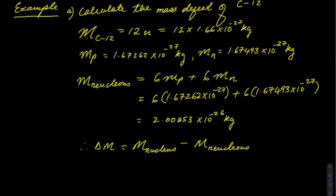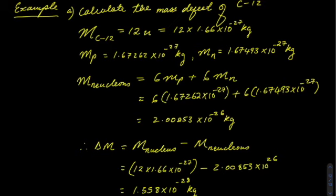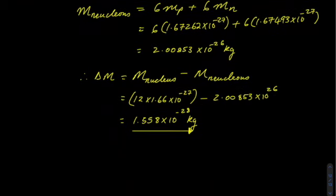The mass defect will therefore be given by the mass of the nucleus minus the mass of the nucleons. And that gives us 1.558 times 10 to the power minus 28 kilograms. We can then calculate the binding energy as the mass defect multiplied by C squared.